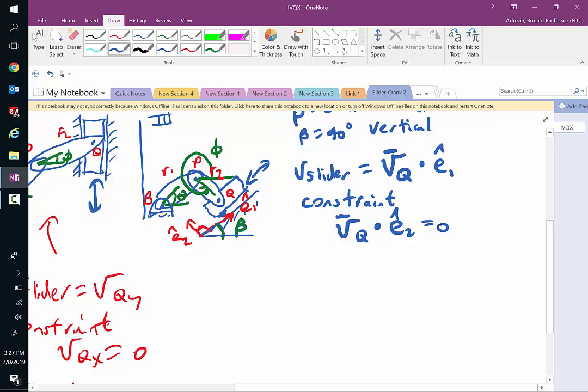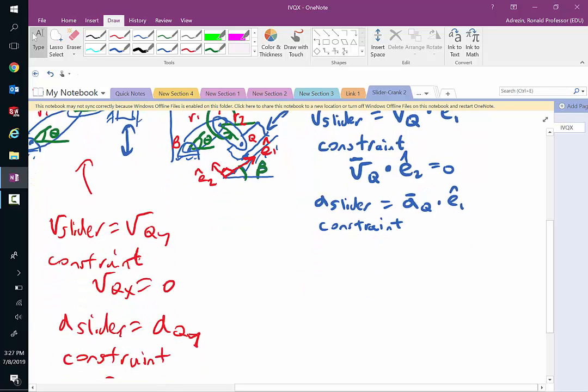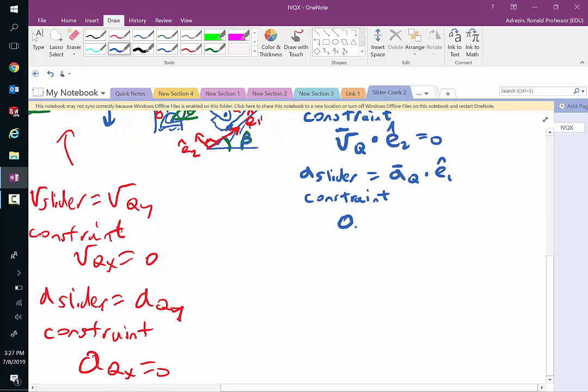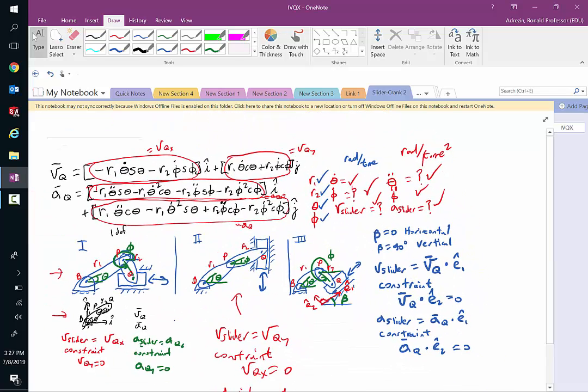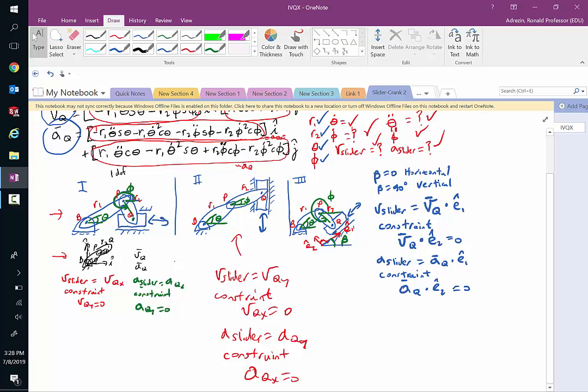And if you need the acceleration of the slider, the piston, whatever you want to call it, very simply, acceleration of the slider is equal to Aq, that whole mess from before, dotted with E1. And my constraint would be acceleration of q the vector dotted with E2 is equal to zero. So remember from the videos before, there is a velocity of q, there's acceleration of q. Hopefully we remember from math, dot products. If not, you can review that. So all I need to do is figure out what my E1 is.